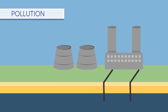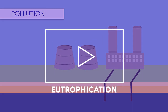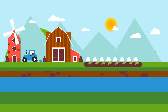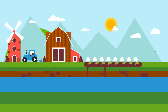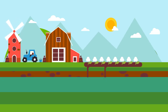Another big water pollution problem is eutrophication. Phosphorus and nitrogen in fertilizers run off agricultural fields and pass into rivers. These surplus nutrients cause algae to bloom, which then starves other aquatic species of oxygen and light, causing them to die.